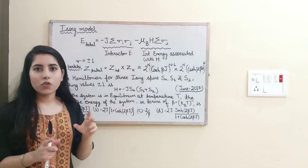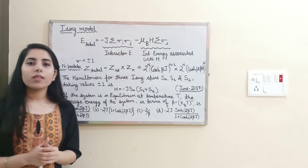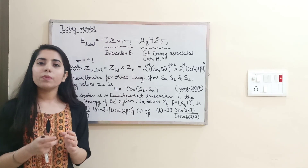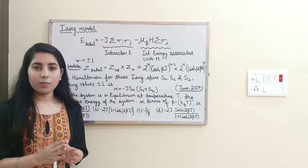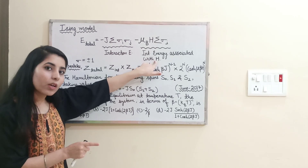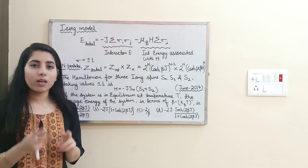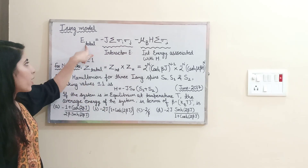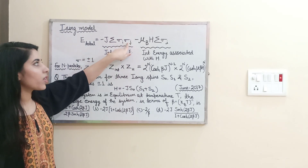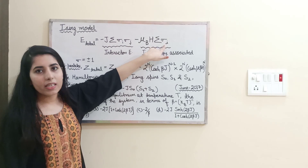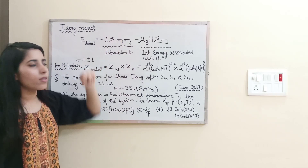The first important formula is the total energy of the system. The total energy has two contributions: one due to the interaction between particles, and one due to the magnetic field. So the total energy is: E = −J Σ σᵢσⱼ − μ_B H Σ σᵢ, where the first summation is over pairs (i,j) and the second is over i.